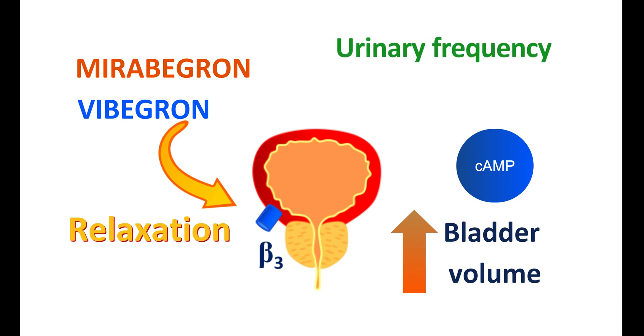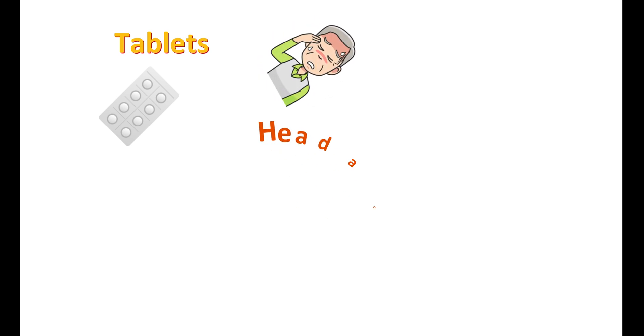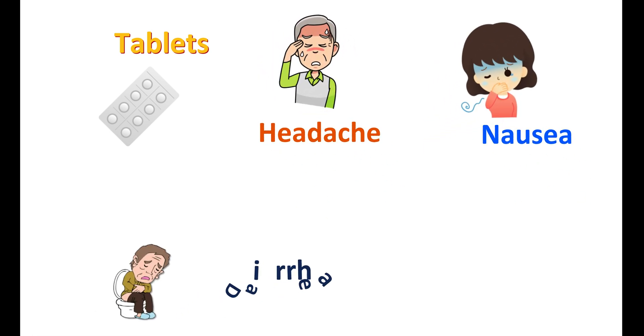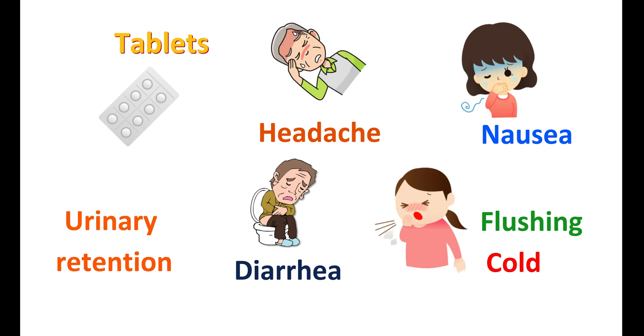Therefore, both urinary frequency and urinary incontinence are relieved. These drugs are available as tablets and can be taken by mouth. In terms of side effects, beta-3 agonists mainly produce headaches, nausea, diarrhea, flushing, and cold-like symptoms. When used for a long time, they may cause urinary retention.